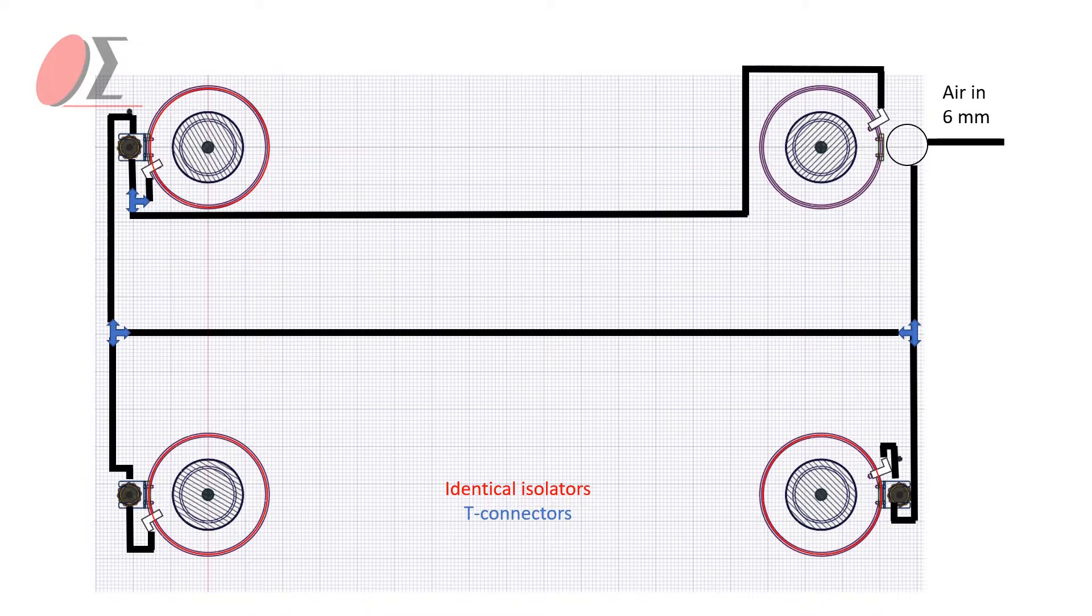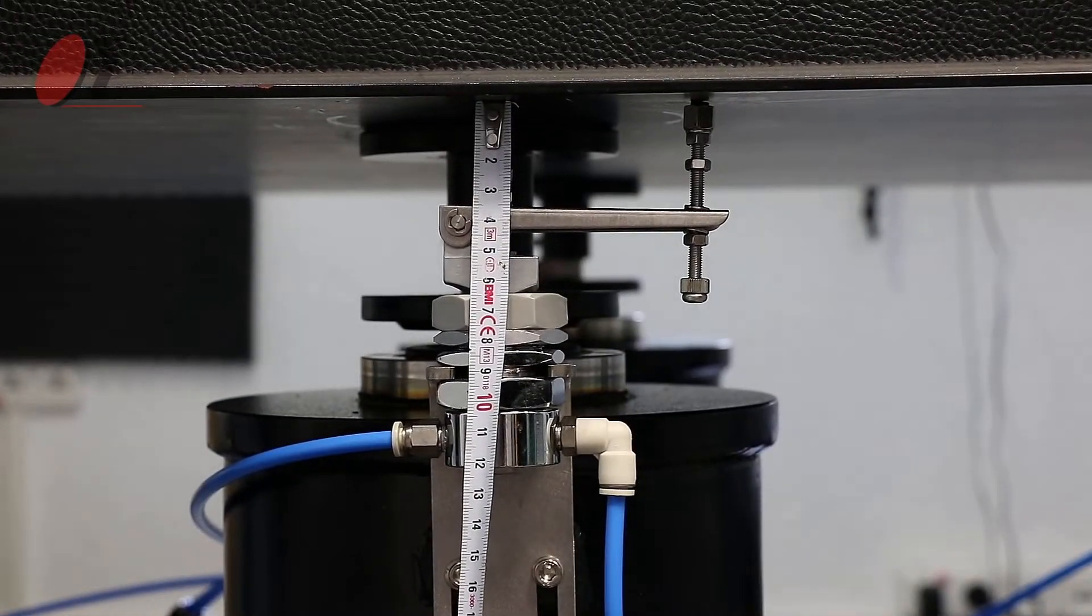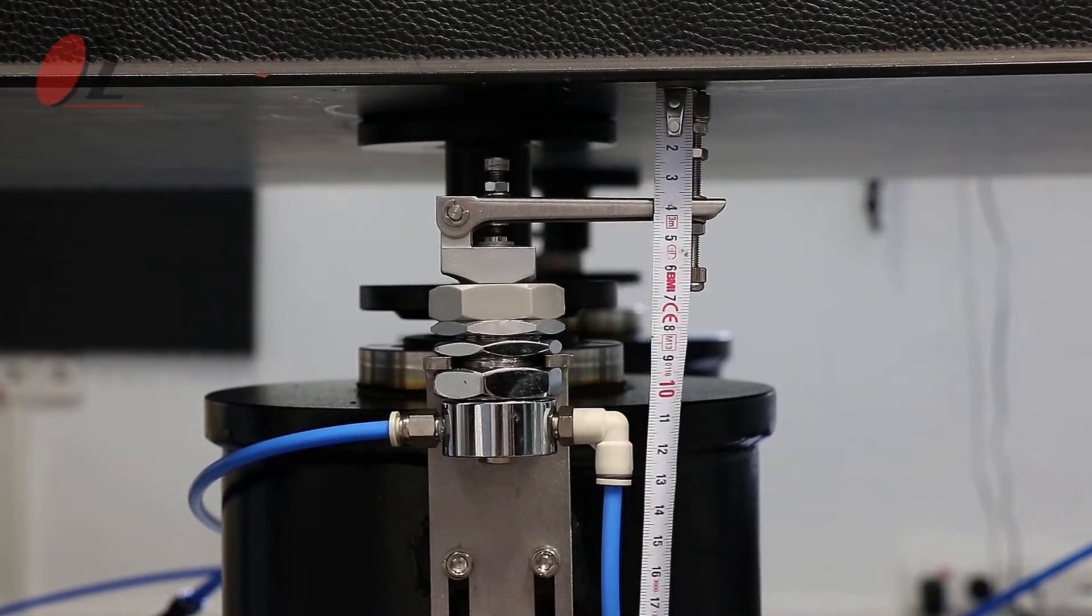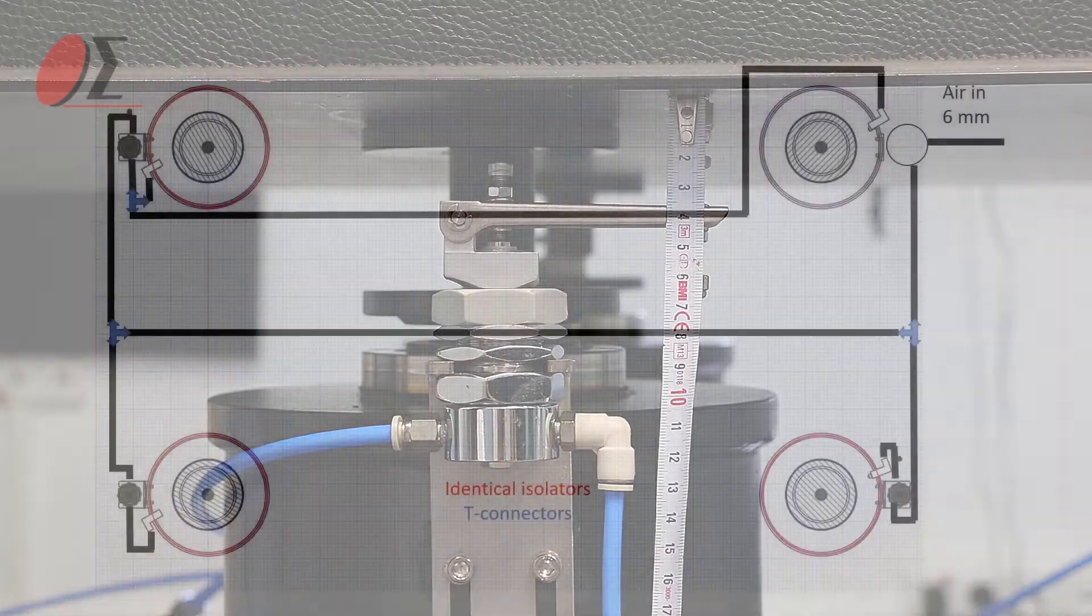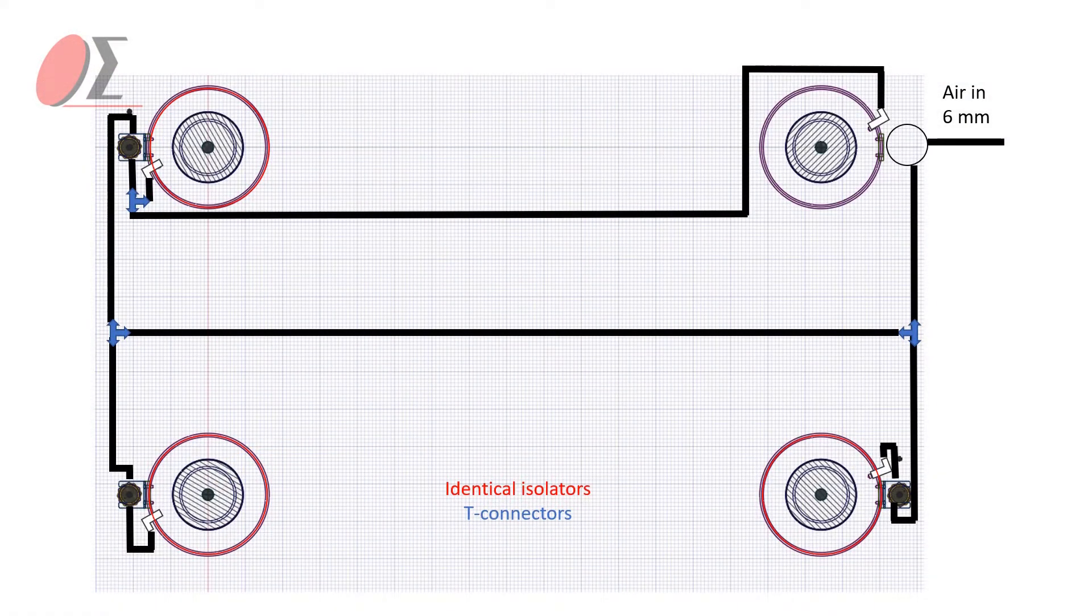After the successful manual leveling of the table, we recommend that you pay good attention to the horizontal alignment of the lever arm. This is crucial for the proper workflow later on.